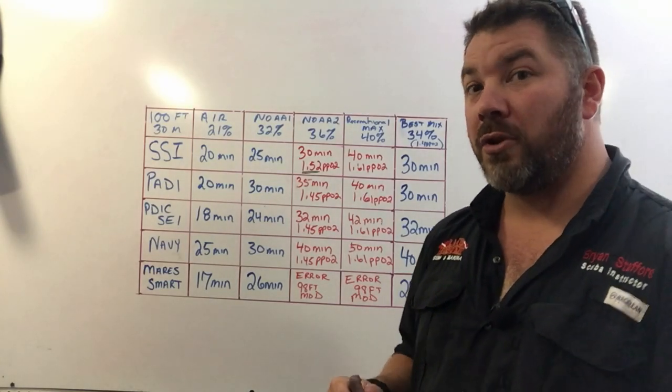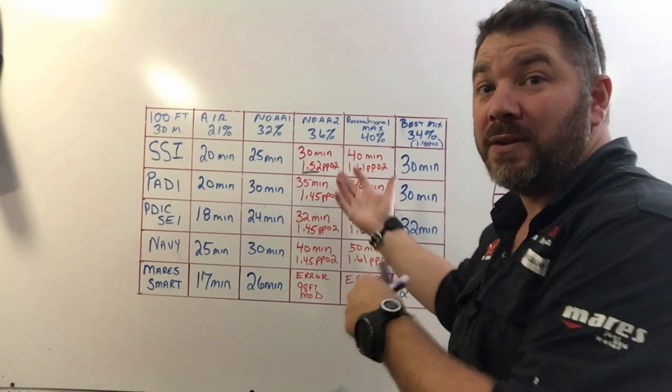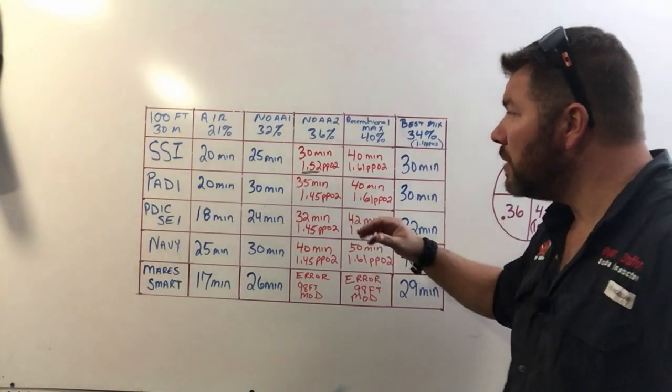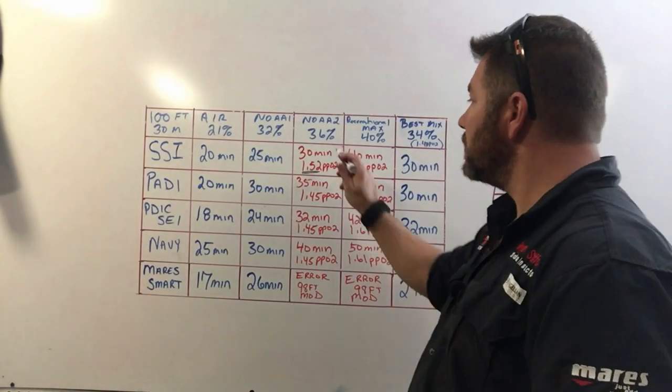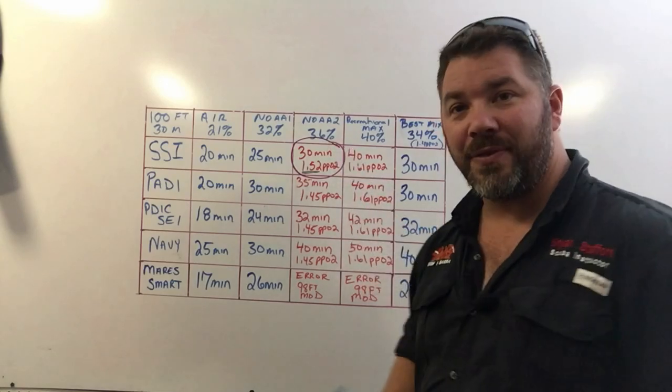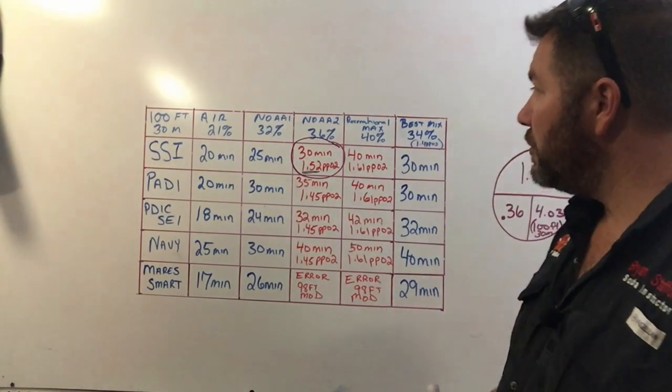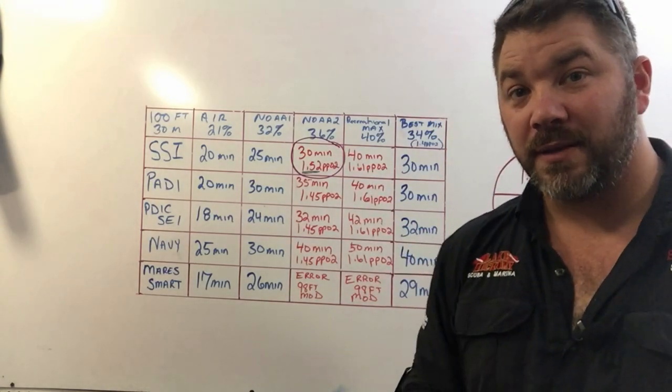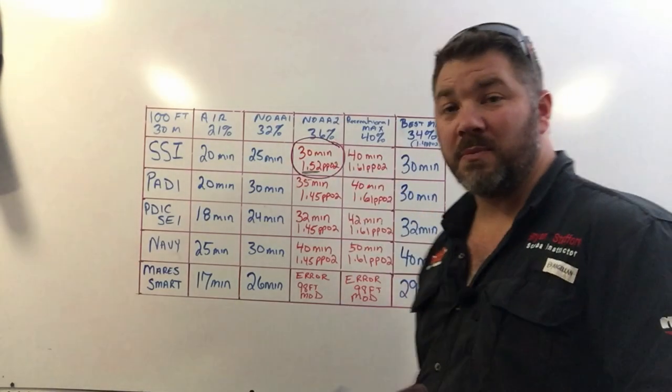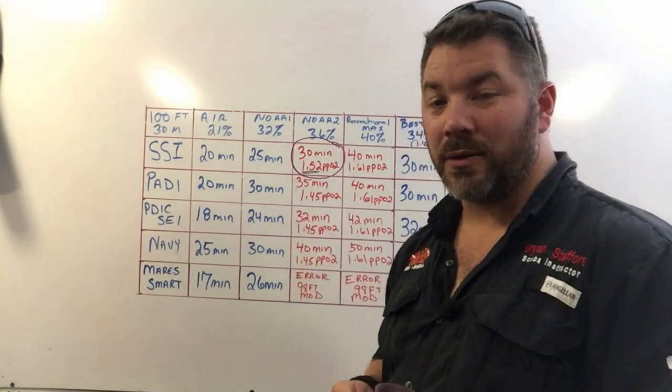So just to point it out real quick, this right here is what we're looking for. The Easter egg is right there. So if we do a dive to say a hundred feet and we use thirty-six percent nitrox or enriched air nitrox.